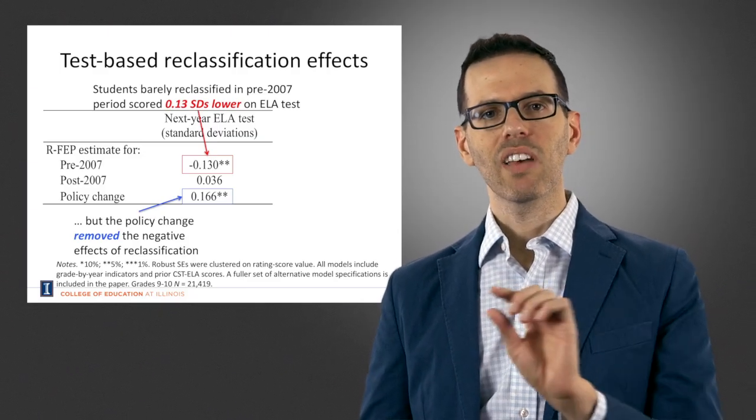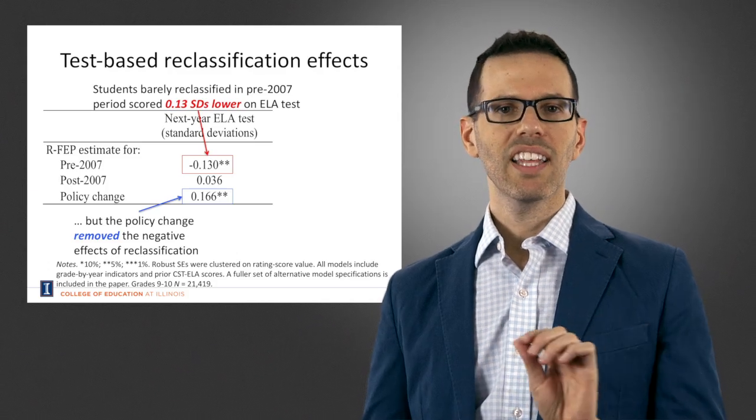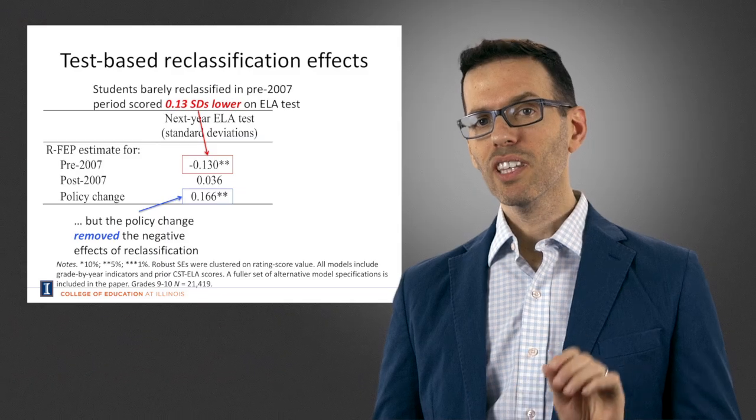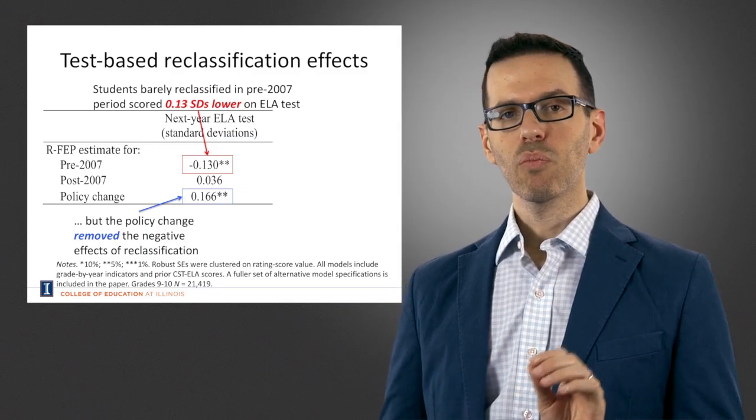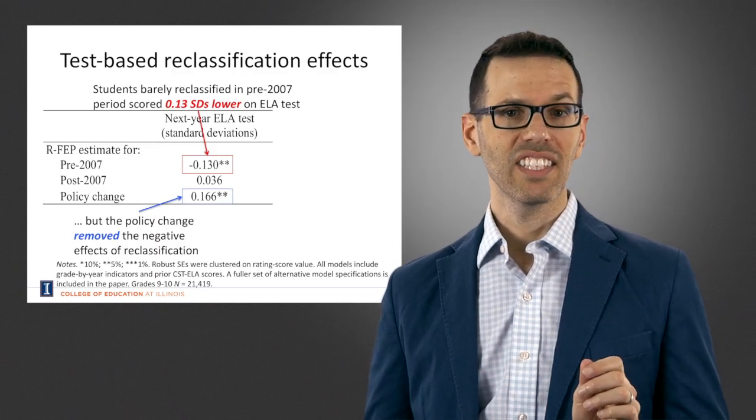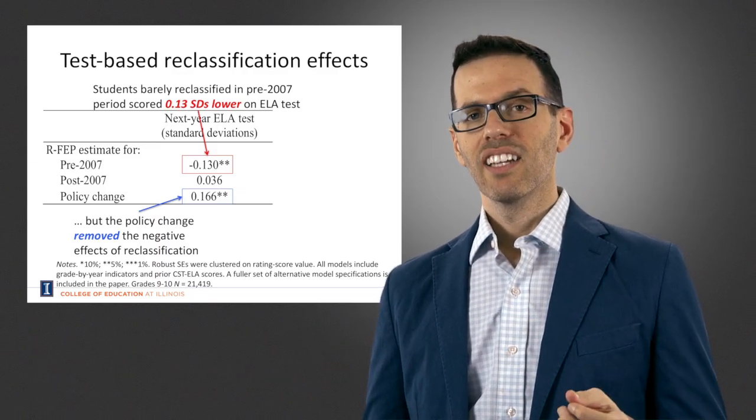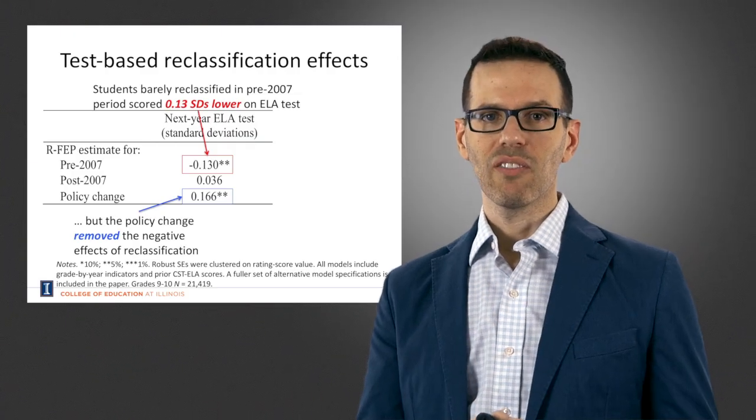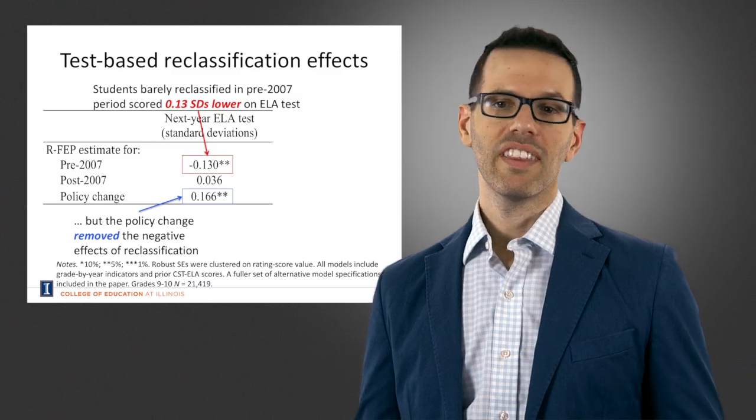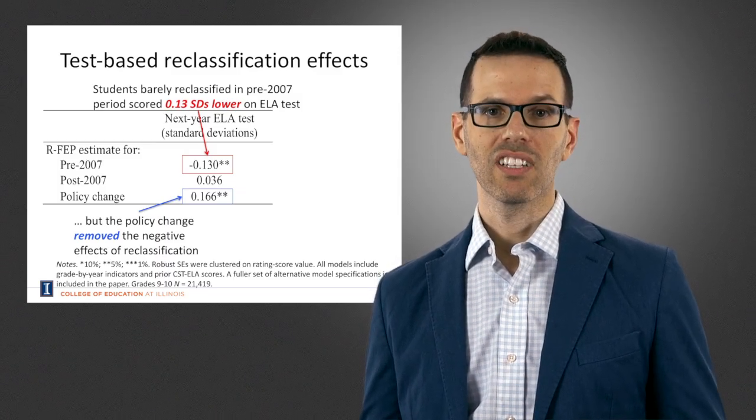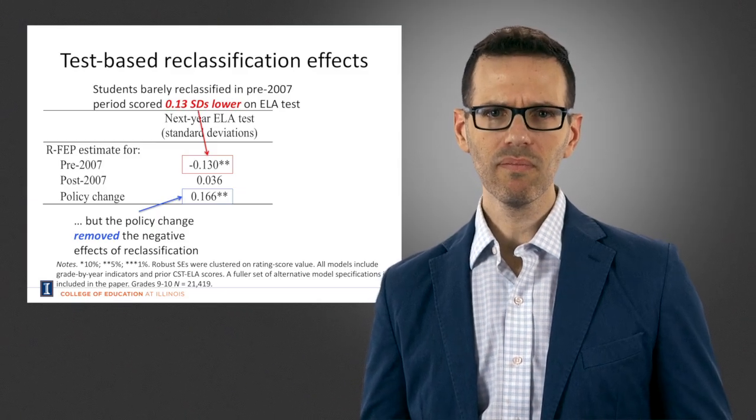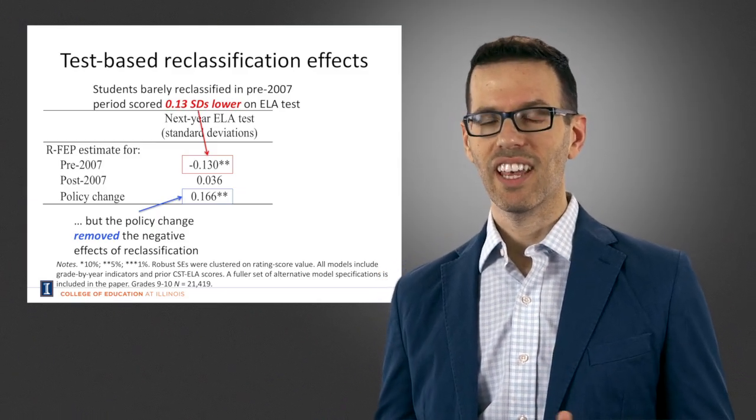Then we look at the post-2007 estimate and we see that it's not significantly different from zero. Now what's particularly important here is when you look at the policy change row, you see that it says 0.166. This tells us, and it's statistically significant, that the change in the difficulty level of the test resulted in a policy change effect and it removed the negative effect of reclassification on subsequent academic performance on English language arts tests. Well, that's if we're looking at just the English language arts test.